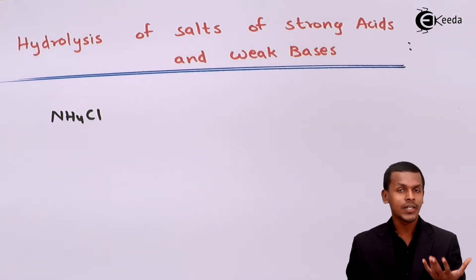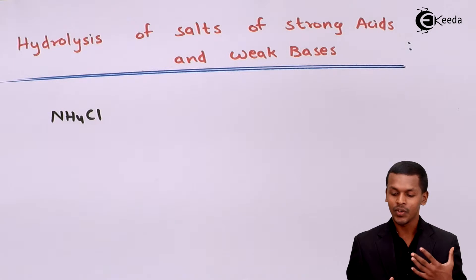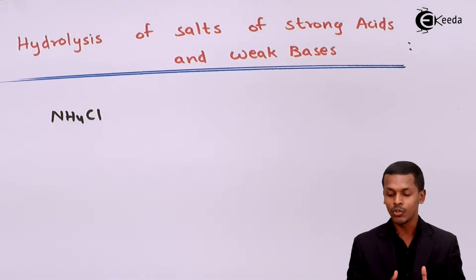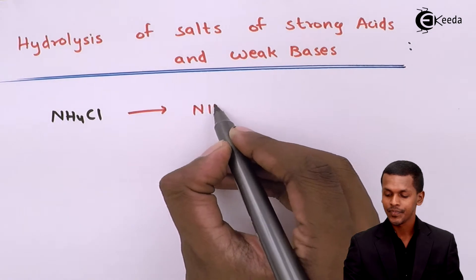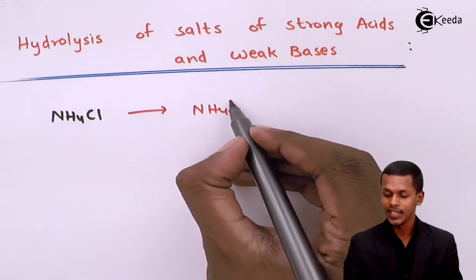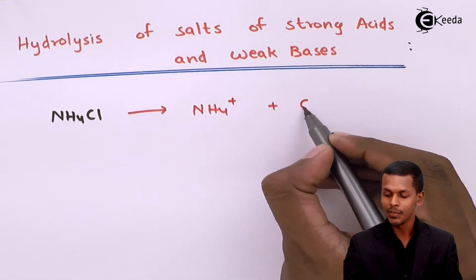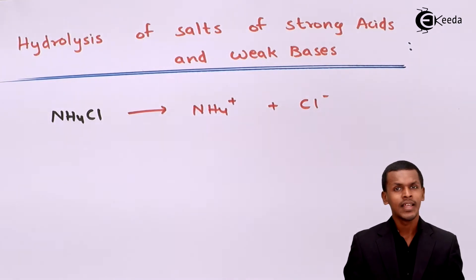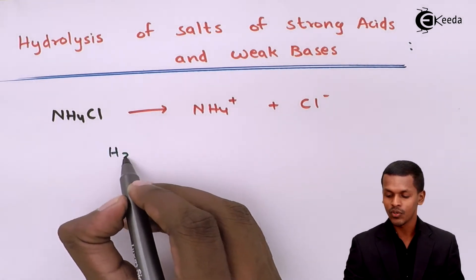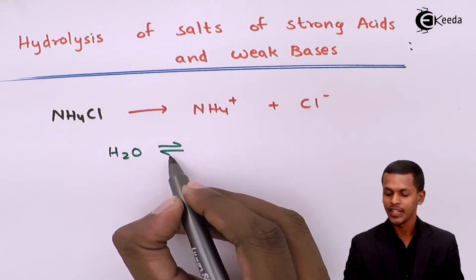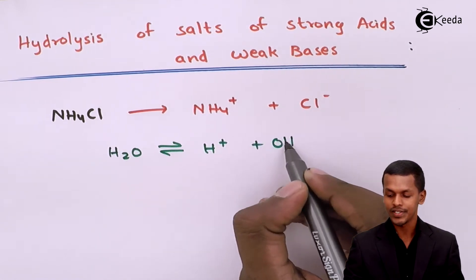NH4Cl is a strong electrolyte because it will dissociate completely into NH4+ and Cl-. So the ionized products are NH4+ along with Cl-. When reacted with water — which is a very weak electrolyte — water will partially dissociate into H+ and OH-.